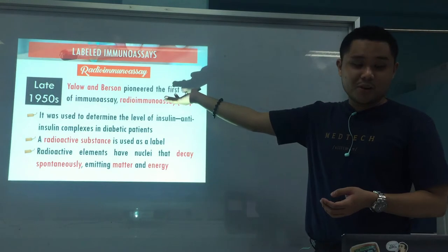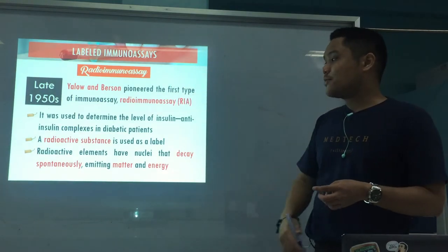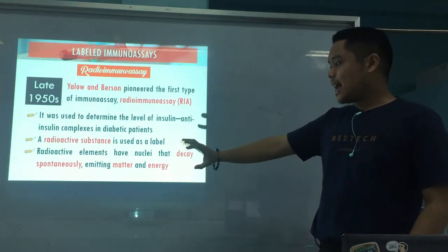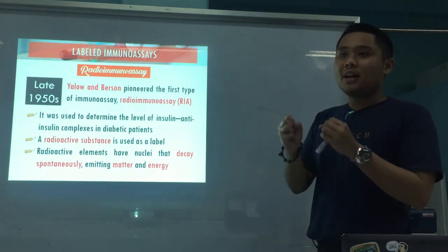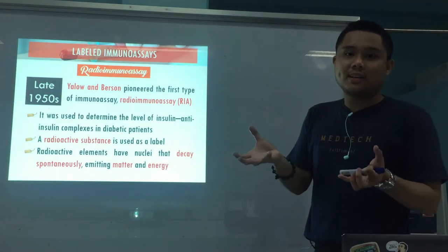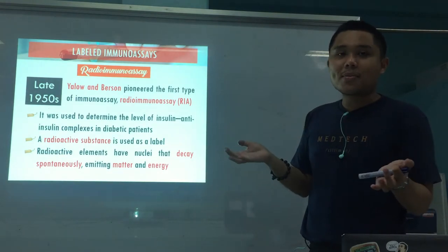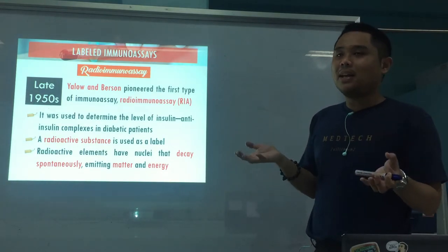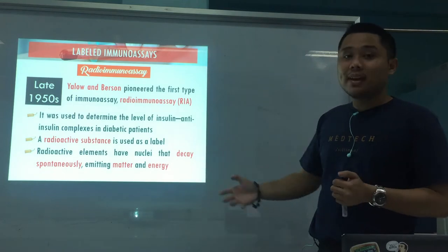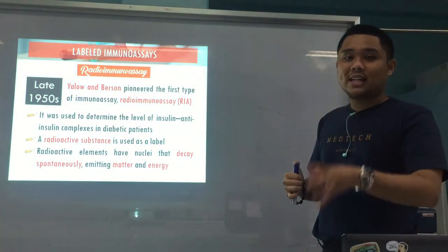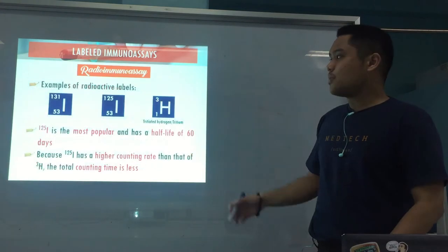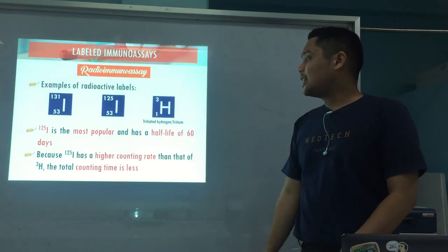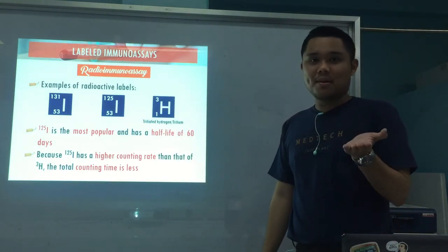As mentioned, by the name itself — radio immunoassay — the labels used are radioactive substances, or radio isotopes. These are bio-radioactive elements; they have nuclei that decay spontaneously. Meaning they break down on their own, like out of nowhere, without needing any external trigger. At their own time and ability, they decay. And once they decay, they emit matter and energy, which is what we detect. Some of the labels used are iodine-131, iodine-125, and tritium — tri-treated hydrogen.